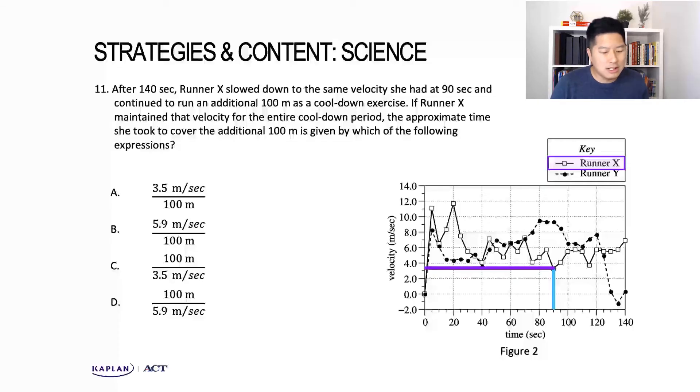The question is asking how much time would it take for runner X to run an additional 100 meters after the race is complete. If we're looking for time, remember that three-part formula: distance equals rate times time. Since we're solving for time, we need to move rate over to the left-hand side by dividing both sides by rate. So the equation we're going to use is time equals distance over rate.